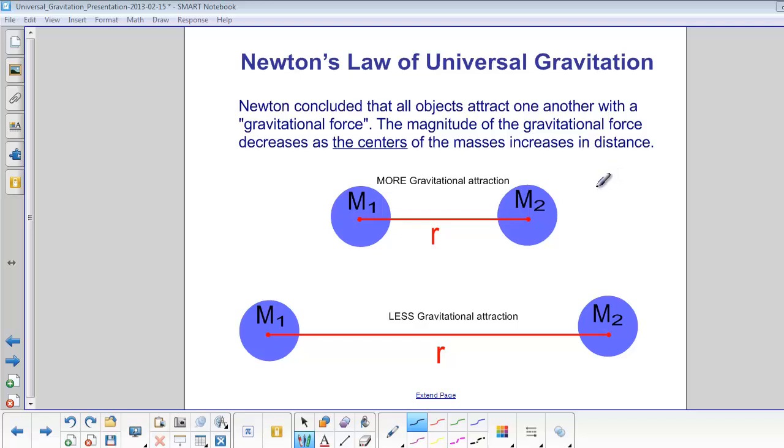What he found out was that more mass meant more gravitational attraction. So that meant that the force was proportional to the masses. He also figured out that the force was inversely proportional to the square of the distance between the centers. So the further those objects got away from each other, the less gravitational attraction.